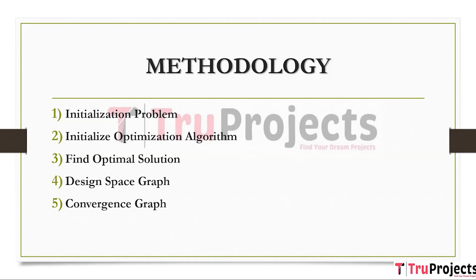Third is find optimal solution. In this module, the initialized optimization algorithm is executed to find optimal solutions for the defined problem. The algorithm iteratively generates new solutions by performing mutation and crossover on the initial population. It evaluates the fitness of each solution based on the objective functions and constraints defined in the problem.